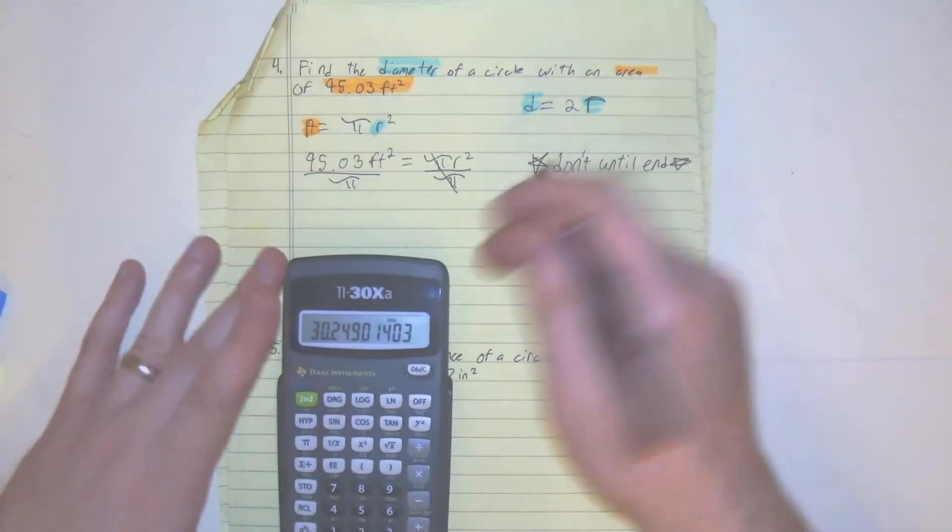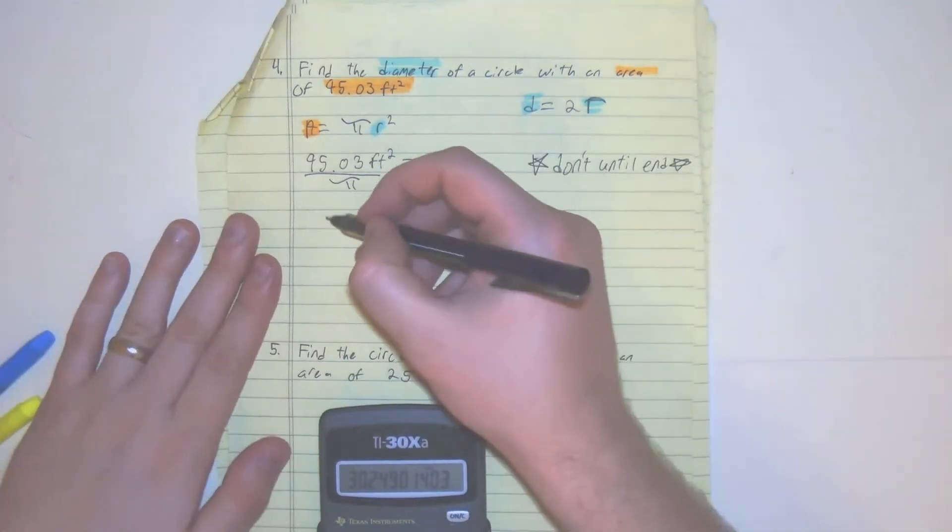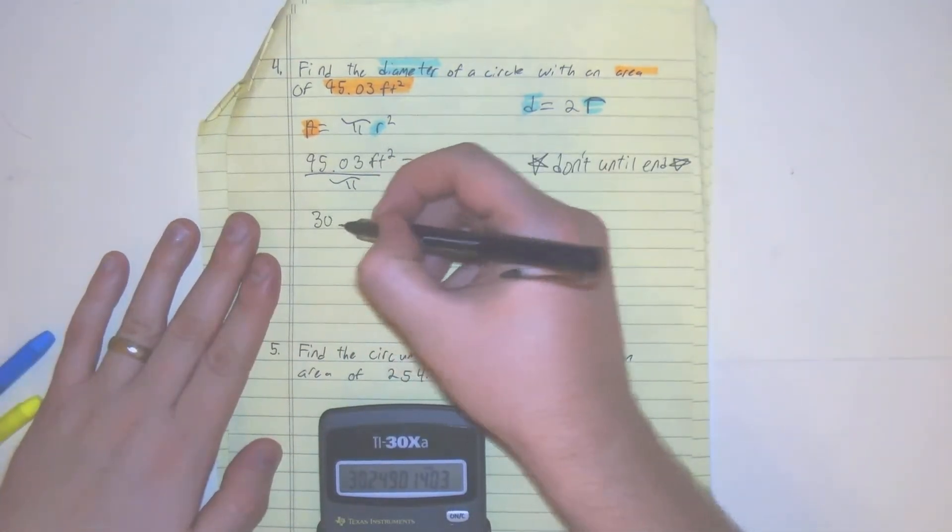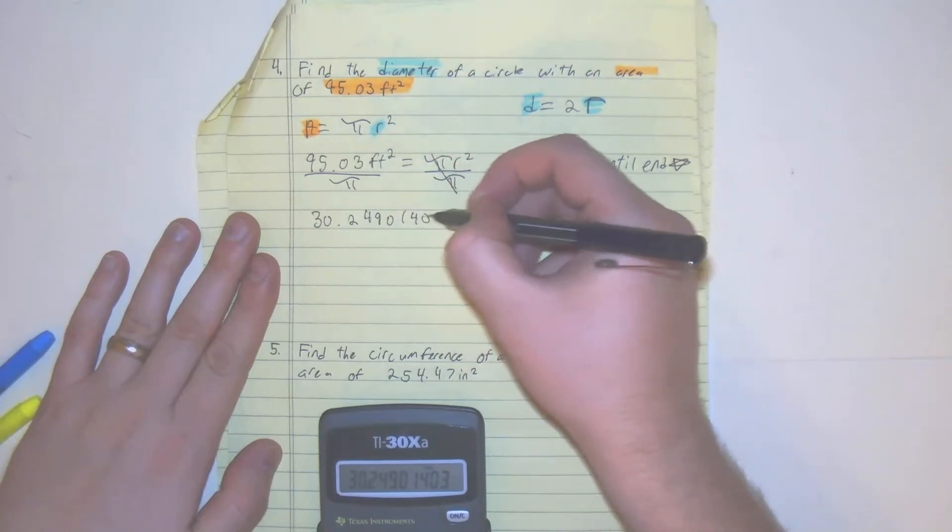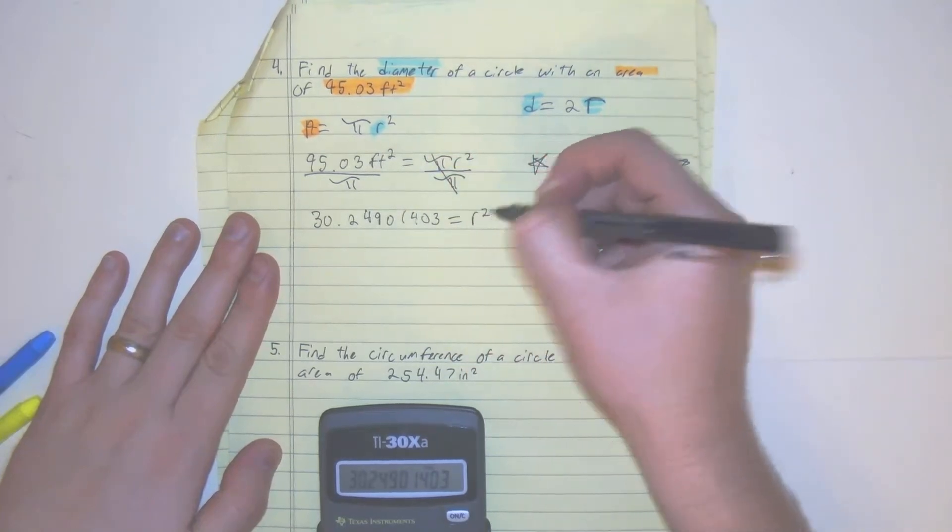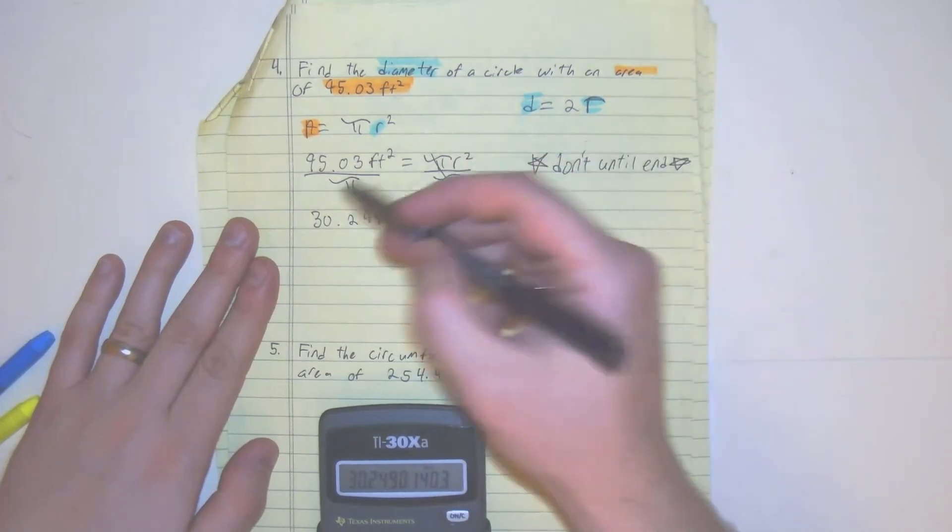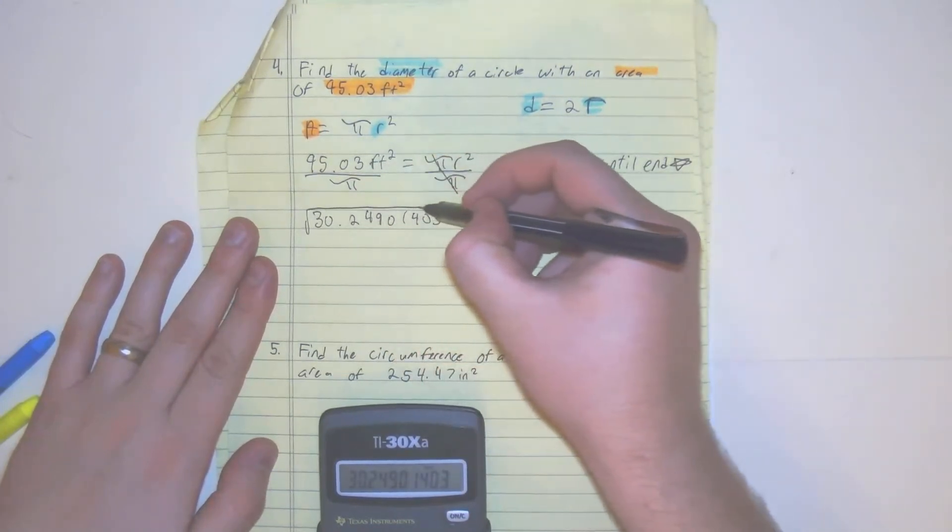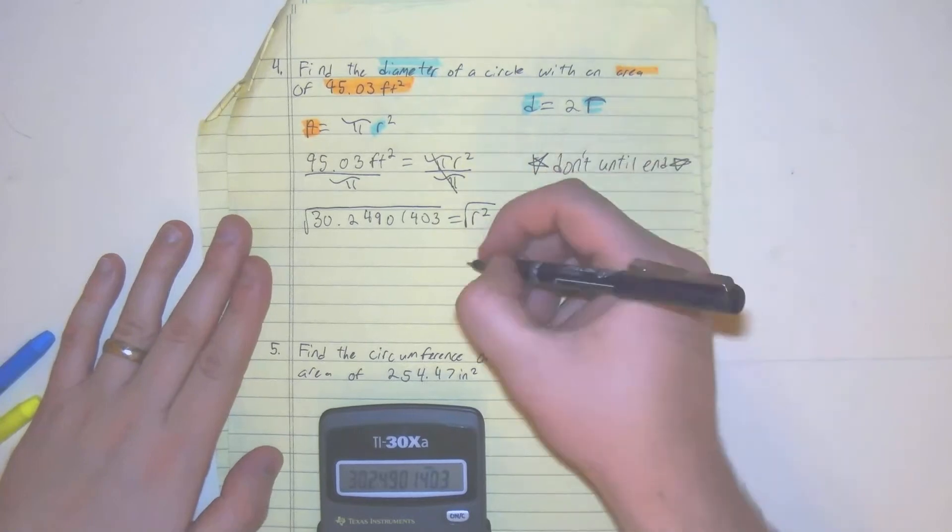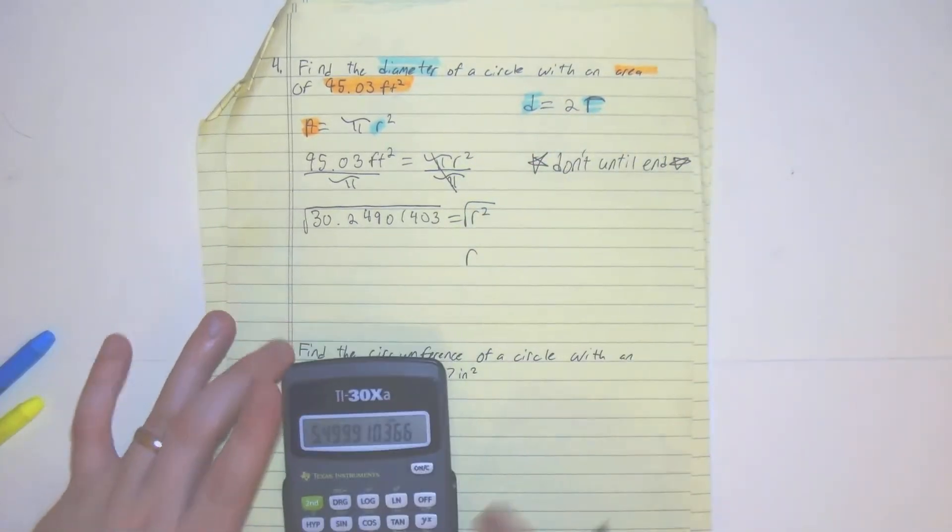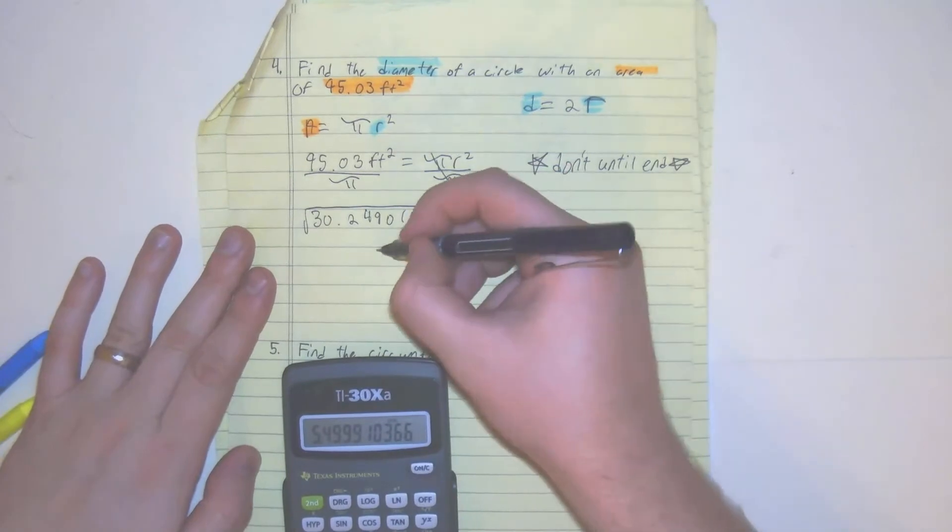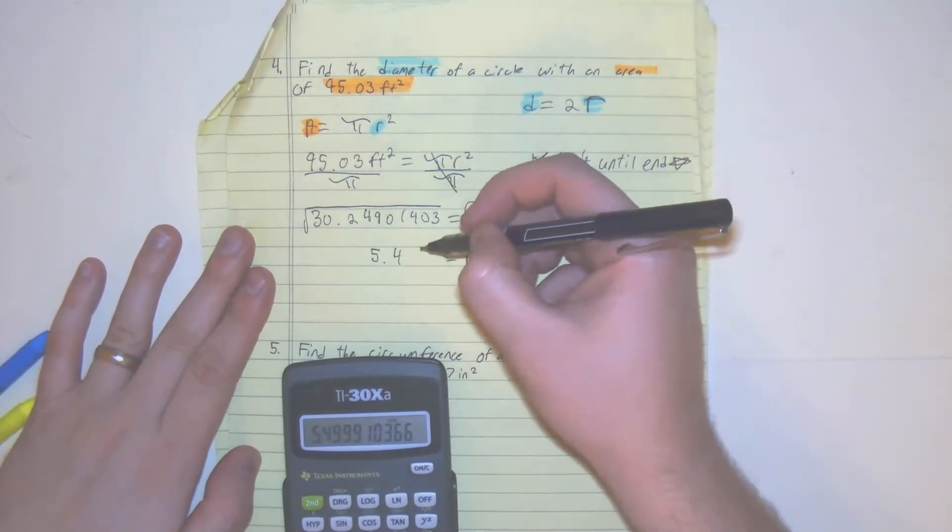Alright, so what we have here, I'm just going to write down the numbers so you can see. We have 30.24901403 equals r squared. The inverse of r squared is the square root. So we square root both sides. We get the radius is equal to 5.49991033.